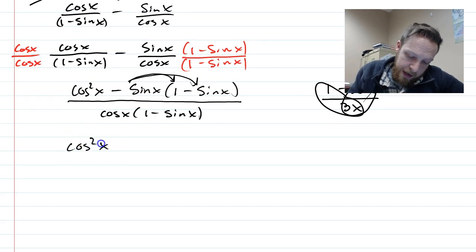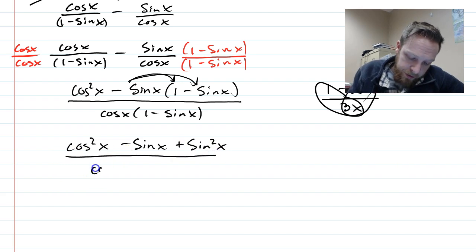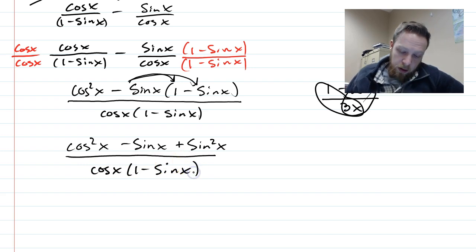So I'm going to instead distribute the negative sine in to both of those terms in the parentheses. So we have cosine squared x. It's going to be minus sine x times one, which is minus sine x. And then minus sine x times minus sine x is plus, and it will be sine squared of x right there. All right, and downstairs the denominator is remaining the same.